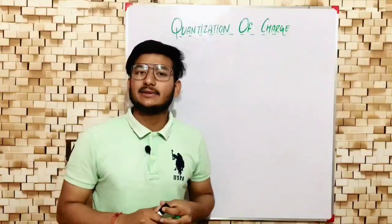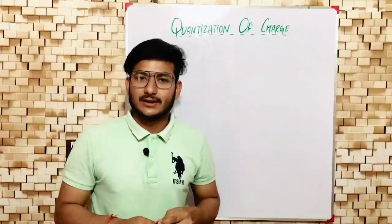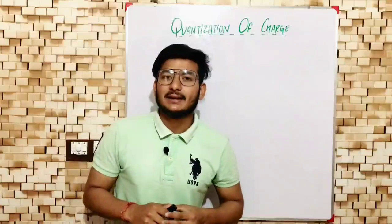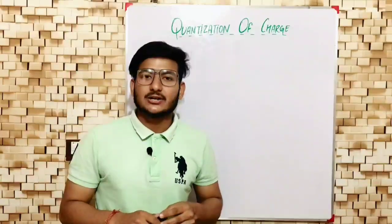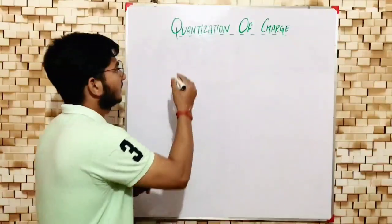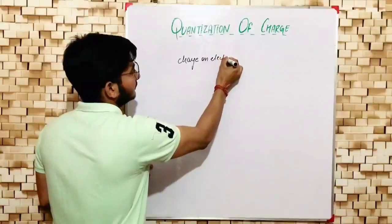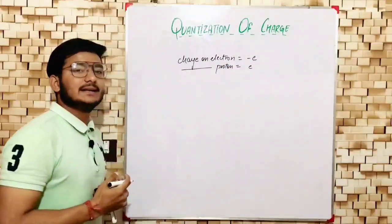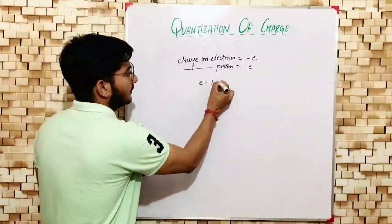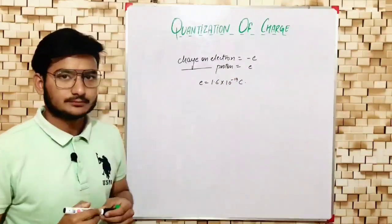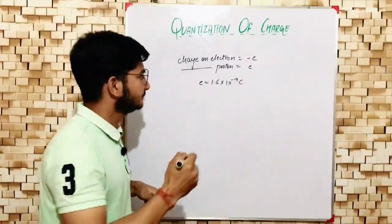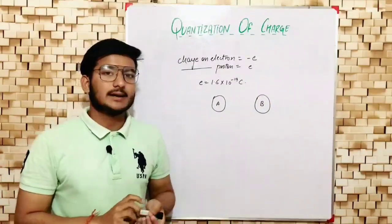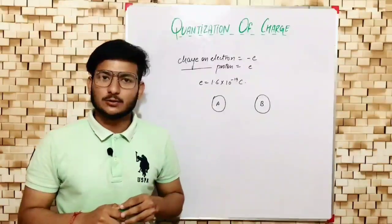Quantization of anything means that thing must be countable — like grains of rice, you can count them. Similarly, we can count electric charges. The smallest considerable negative and positive charges are the charges on an electron and a proton. The charge on an electron is −e and on a proton is +e, where e is the elemental charge with a value of 1.6×10⁻¹⁹ coulombs. Suppose we have two bodies A and B; initially both are uncharged, meaning the number of electrons equals the number of protons in each.